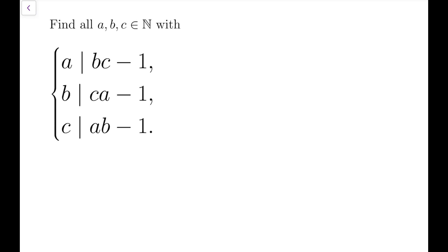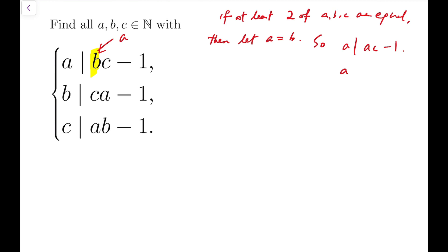So the first case is when at least two of A, B, C are equal. Then by symmetry, I can let A equals B. If I replace this B to be A, then I will have A divides AC-1. So then we have A divides AC-1, and that means A must be 1.